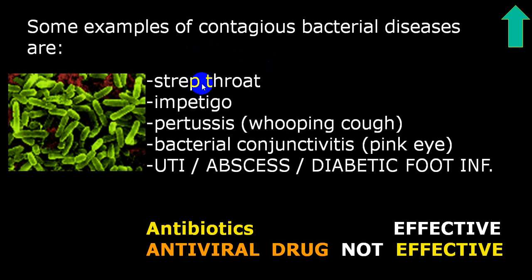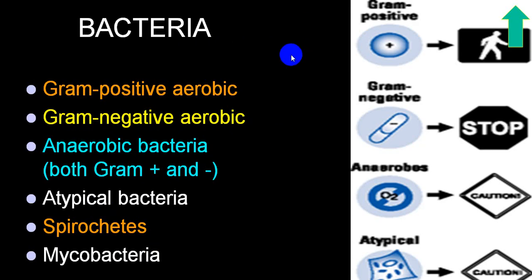For bacterial infections like streptococcal throat infection, impetigo, pertussis, bacterial conjunctivitis, UTI, abscess, and diabetic foot, antiviral drugs are not effective — antibiotics are effective. You need to find out which bacteria is involved. Bacteria include gram-positive, gram-negative, anaerobic, atypical bacteria, spirochetes, and mycobacterium. The most common gram-positive bacteria are staphylococci, streptococci, and enterococci; staphylococci and streptococci most commonly involve the skin.